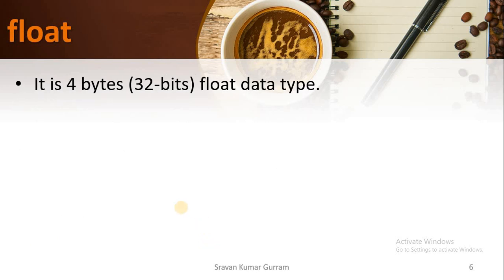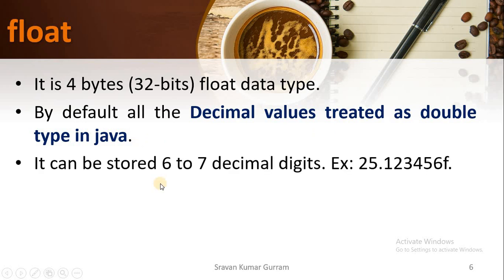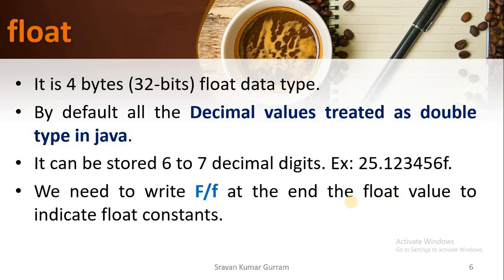Let us see the properties of the float data type. It occupies 4 bytes of memory, or 32 bits. This is a very important point in Java: by default, all decimal values are treated as double type. Float can store 6 to 7 decimal digits — for example, after the decimal point we can store 6 to 7 digits. An important point is that the suffix f is compulsory when you want to store floating point values as float.